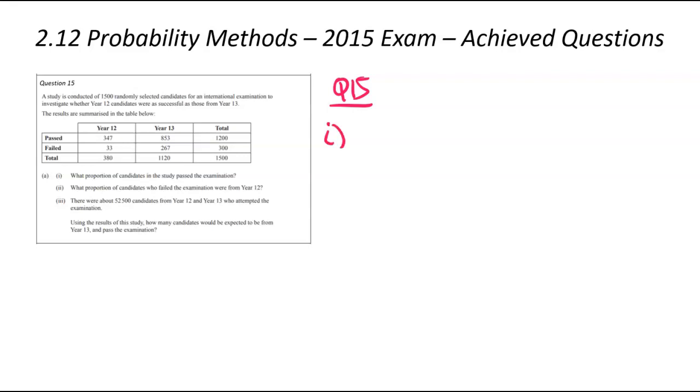Our first question, what proportion of students passed that exam? We're trying to find the probability of passing. F over T is how I like to approach these. There were 1,500 students in total, of those 1,200 passed, which means that proportion would be 0.8.